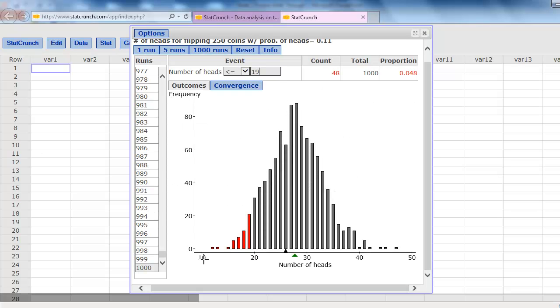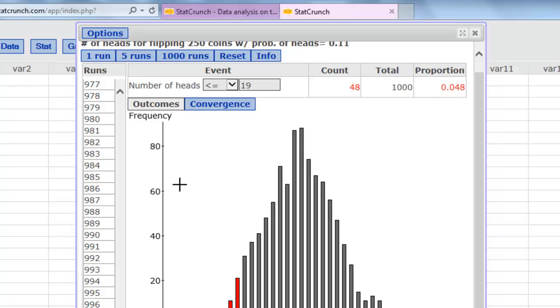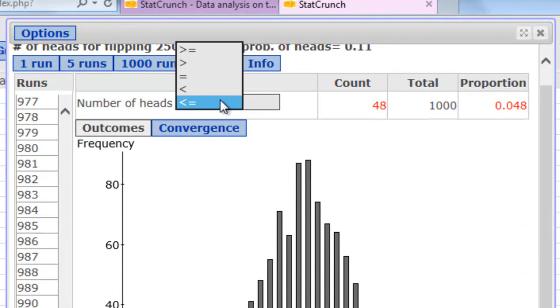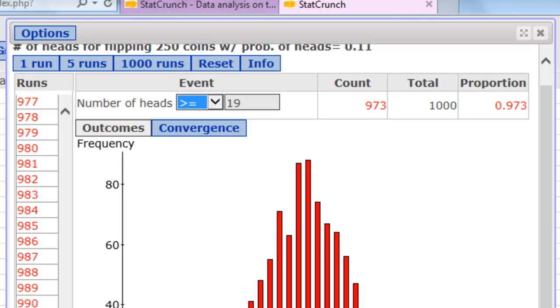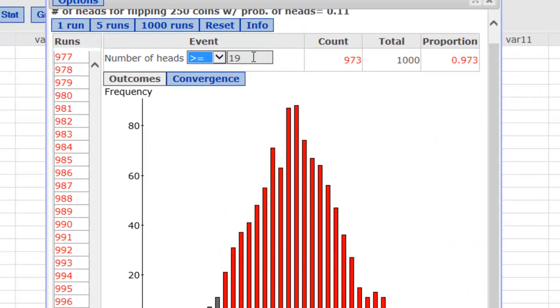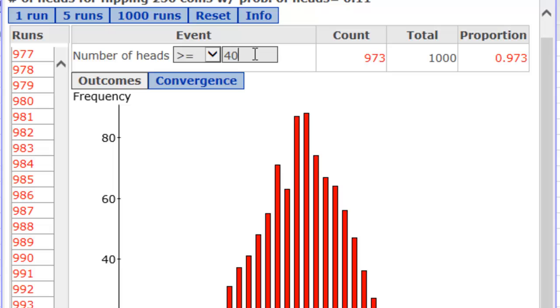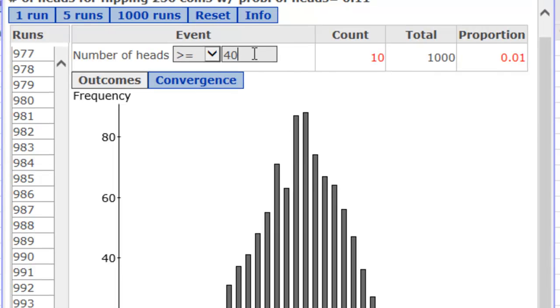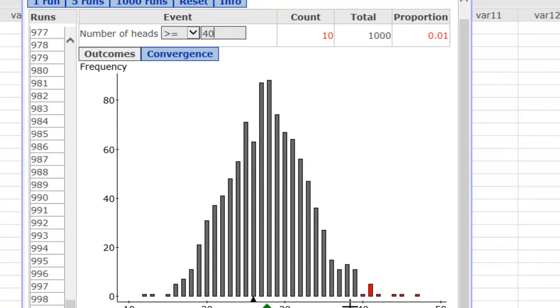Now we'll talk about the upper critical value. First thing we need to do is change the less than or equal to to greater than or equal to, and I want to come as close to 5% as possible. So I'm going to need a number out here. I'm going to begin at 40. You can use a little trial and error on your own. When I put in 40, I get .01, so I need a lower value. So I'm going to start going to the left. I'm going to change 40 to 39.